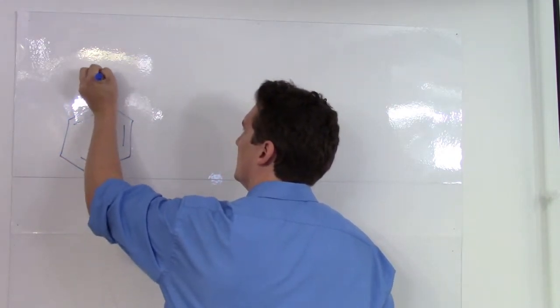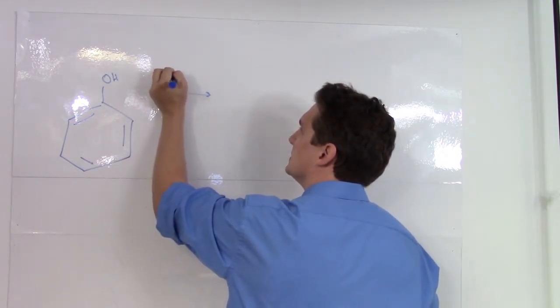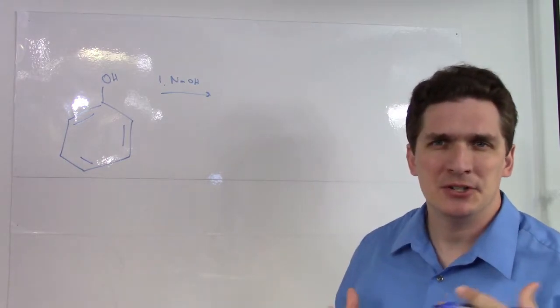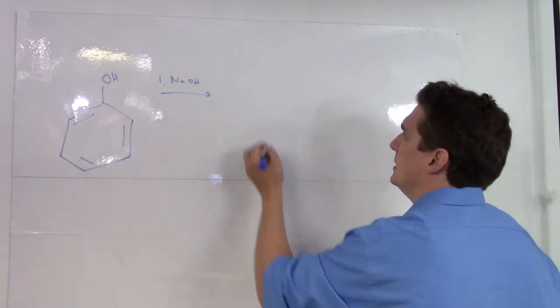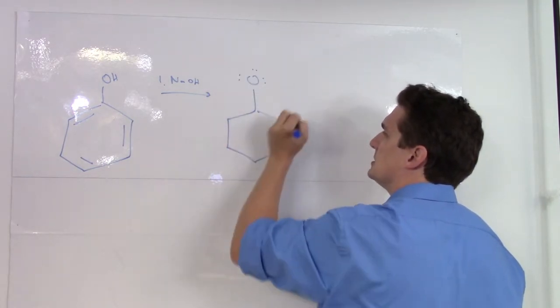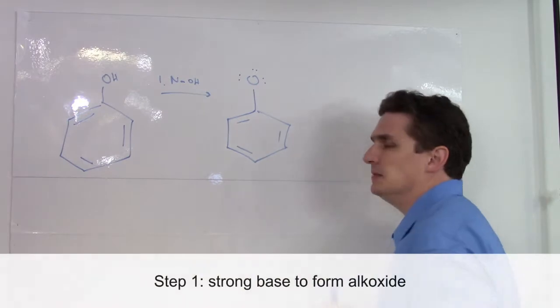We're going to start by adding a very strong base. The reason why we want to add this very strong base is we want to deprotonate the alcohol group to give us the alkoxide ion equivalent of phenol.